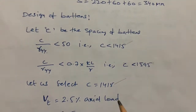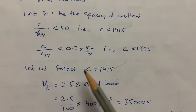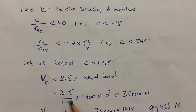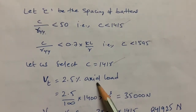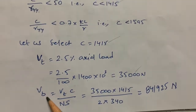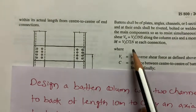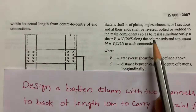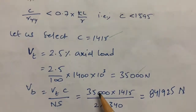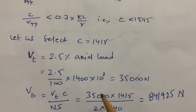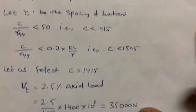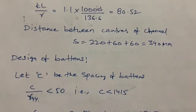Now I calculate the transverse shear V_t, which per IS800:2007 is 2.5% of the axial load. So V_t = 2.5/100 × 1400 kN = 35,000 N. Then V_b = V_t × C / (n × s), where C = 1415, n = 2 parallel planes, and s = 340. The moment M = V_t × C / (2n). I calculate both V_b and M from these formulas.